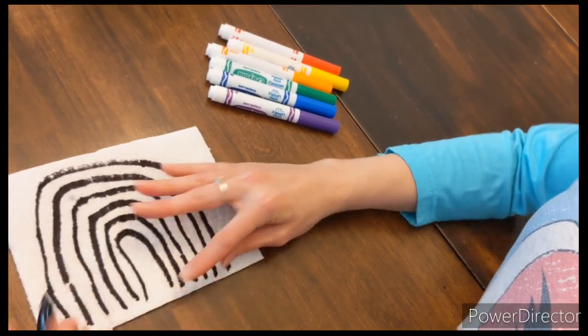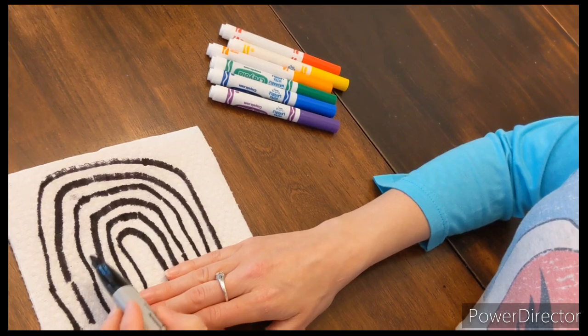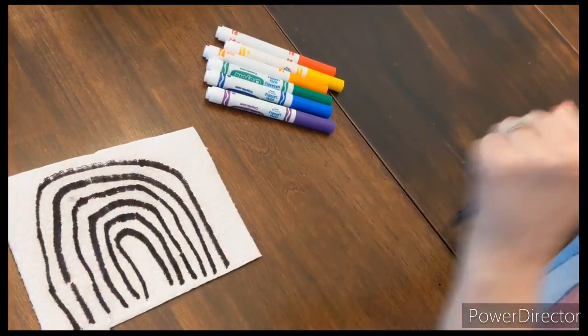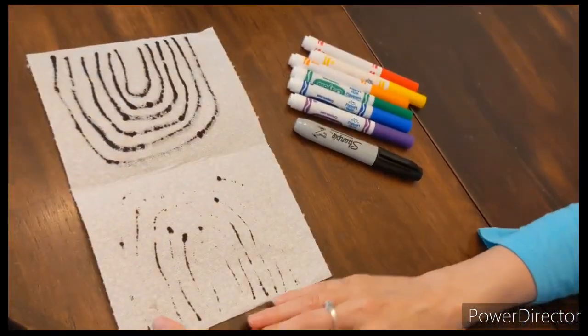Okay, so we have all our spaces for our colors: red, orange, yellow, green, blue, and purple. Now that we have our black rainbow, we're going to flip it open and we're going to do our best to color all these colors in the same spot on the inside.